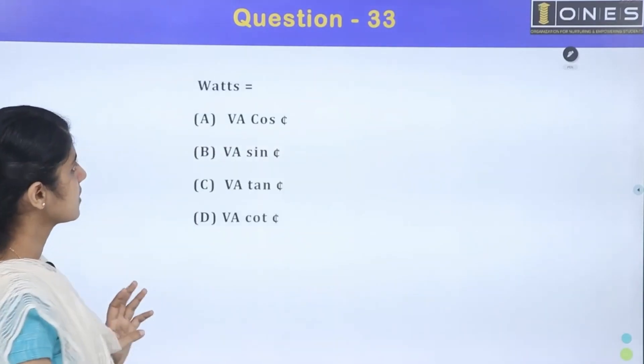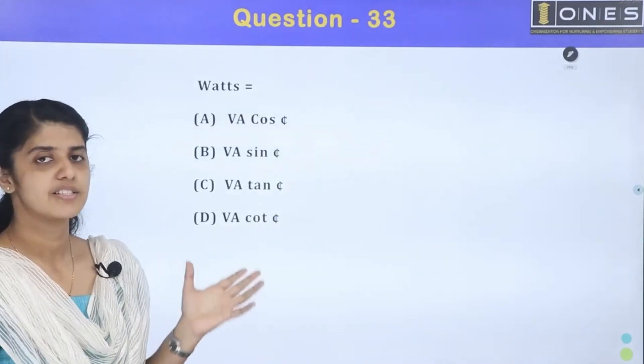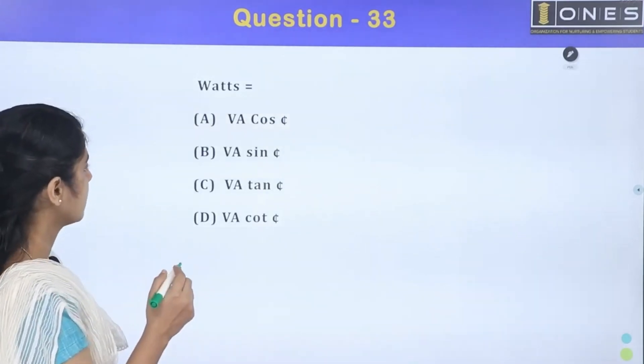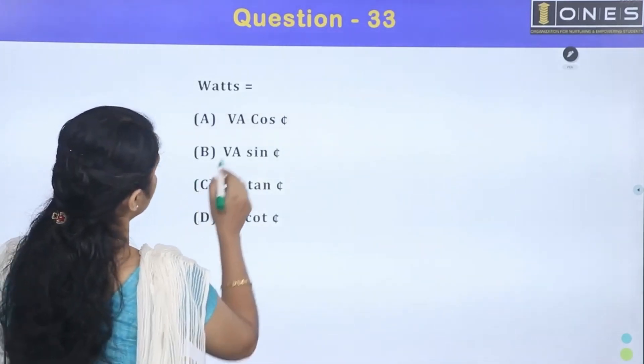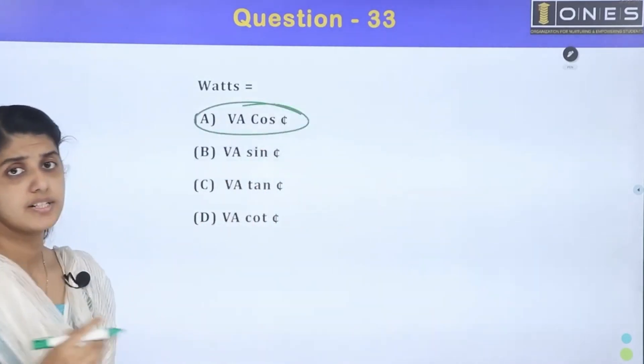Then next question. Watts is equal to... It is simple. Watts is equal to VI cos phi. Watts is equal to VI cos phi. Current, option A.